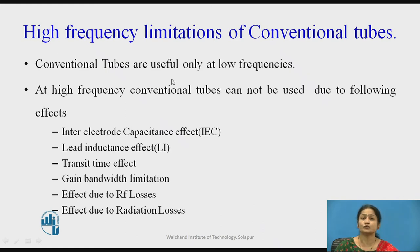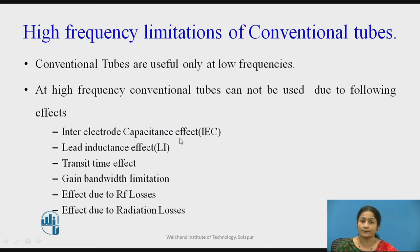Conventional tubes are useful only at low frequencies — we already discussed the range between 300 megahertz to 3000 megahertz. When used at microwave frequency, that is in the gigahertz frequency range, there come limitations. Those limitations are: inter-electrode capacitance effect, lead inductance effect, transit time effect, gain bandwidth limitation, effect due to RF losses, and effect due to radiation losses. Let us see these in detail.